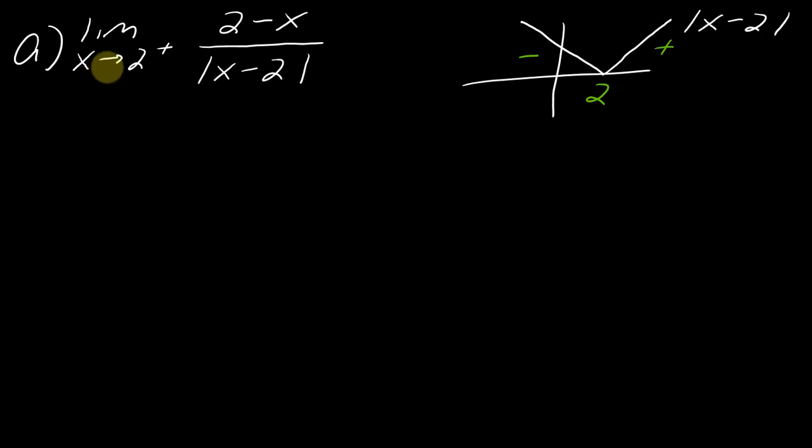So if I think about this then, if I'm approaching two from the right, am I on the negatively sloped side or the positively sloped side? Well, in this case, I would be on the positively sloped side.